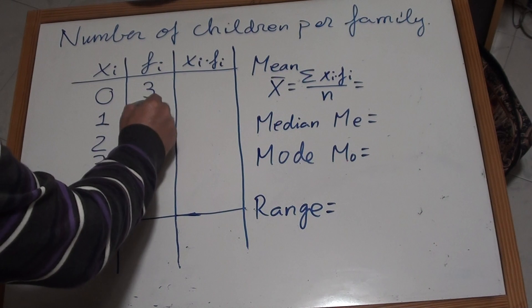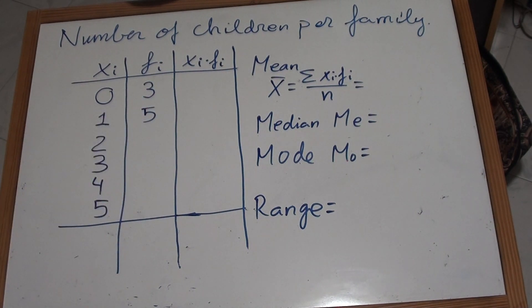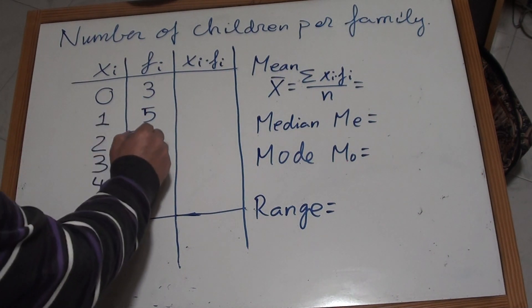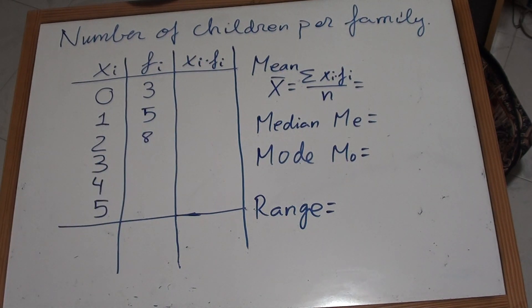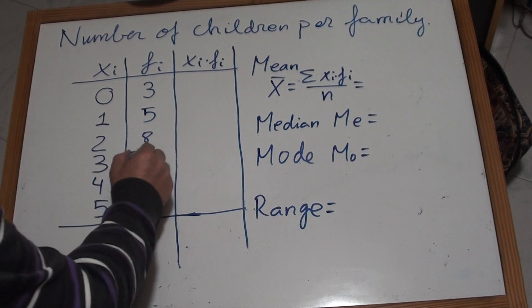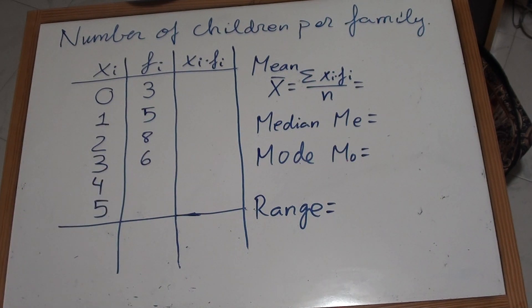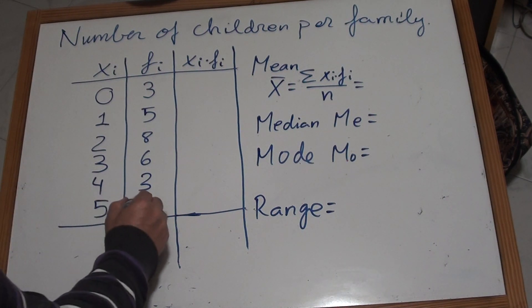5 families with 1 child, 8 families with 2 children, 6 families with 3 for example, 3 families with 4, and 2 families with 5.